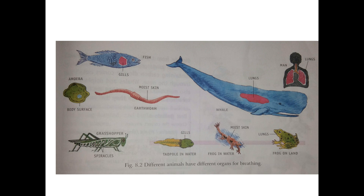Now we will see the breathing organs present in different animals. First, microbes — microbes are small creatures that cannot be seen with the naked eye and are seen only under a microscope. Examples are amoeba and paramecium. In this picture an amoeba diagram is given. Amoeba breathes through its body surface only.